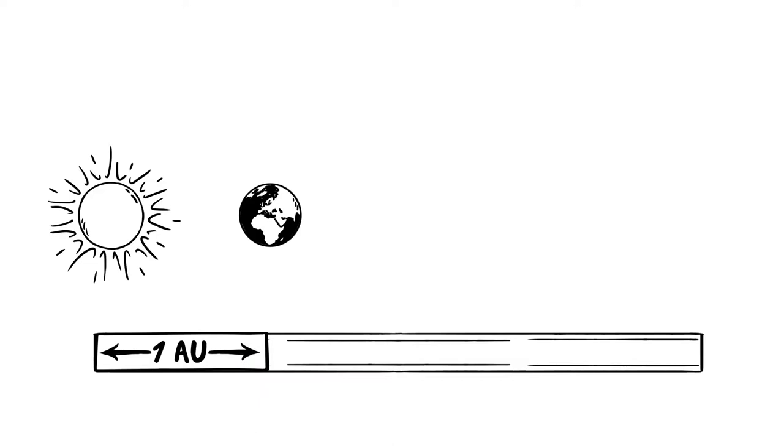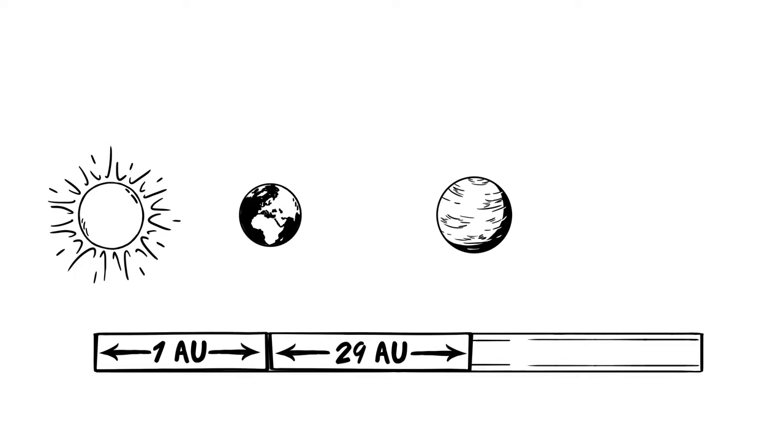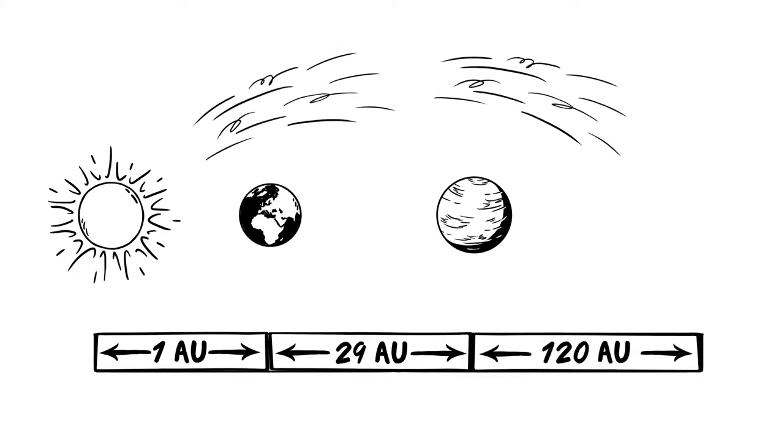The last planet of the solar system, Neptune, is 30 AU away from the Sun. The solar wind travels up to 150 AU. Its reach is called the heliosphere.